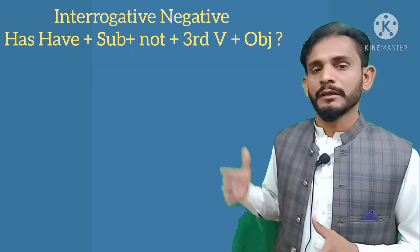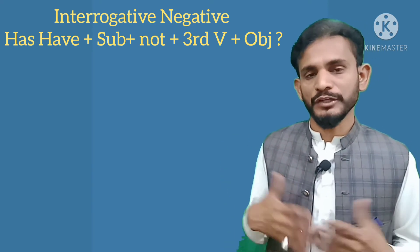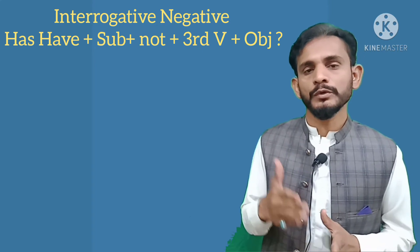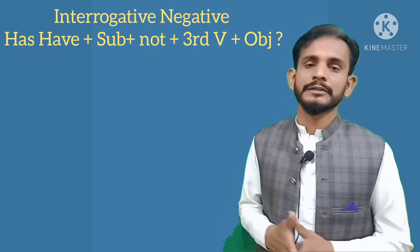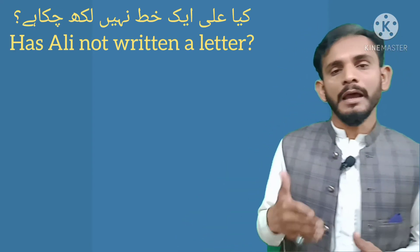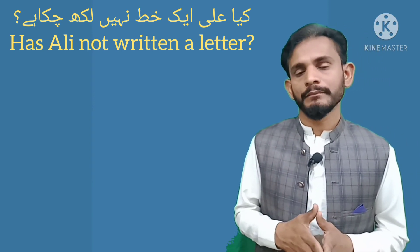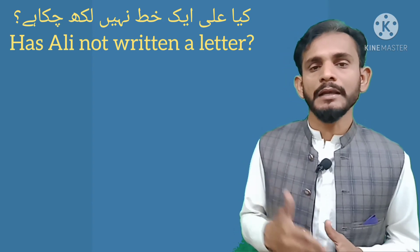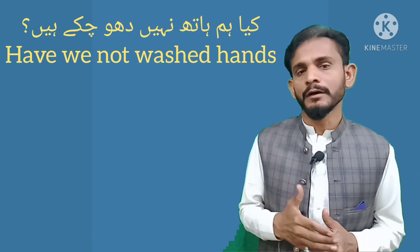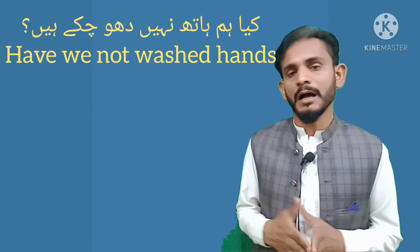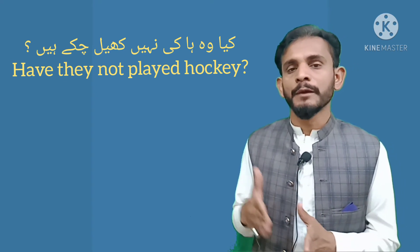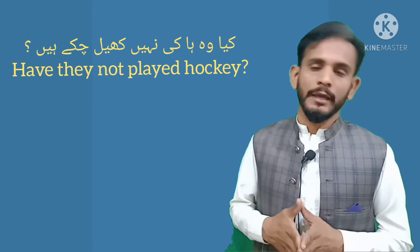اب چلتے ہیں interrogative and negative یعنی سوالیہ اور منفی sentences کی طرف۔ اس کا structure ہے: Has/Have + subject + not + third verb + object + ؟ مثال کے طور پر: کیا علی نے خط نہیں لکھا؟ — Has Ali not written a letter? کیا ہم ہاتھ نہیں دھو چکے؟ — Have we not washed hands? کیا وہ ہاکی نہیں کھیل چکے؟ — Have they not played hockey?